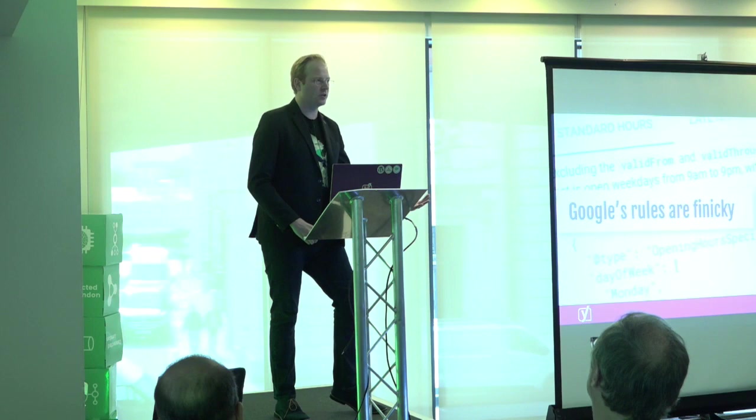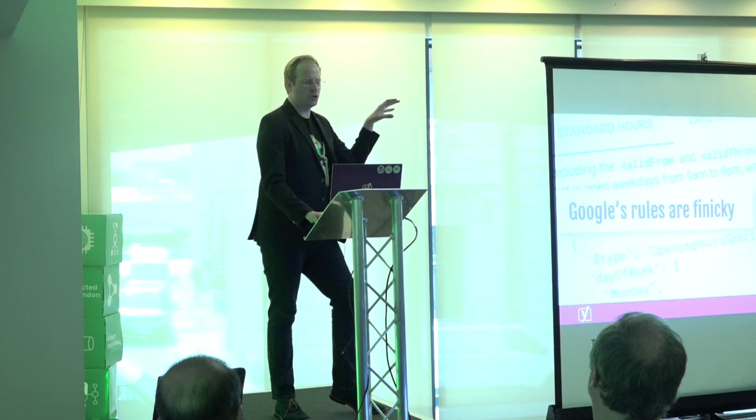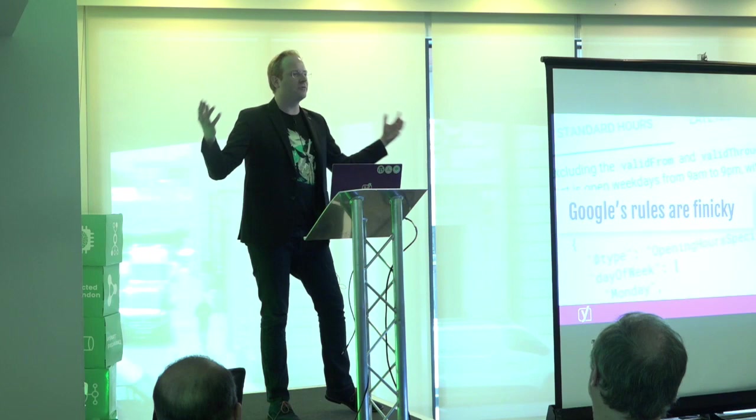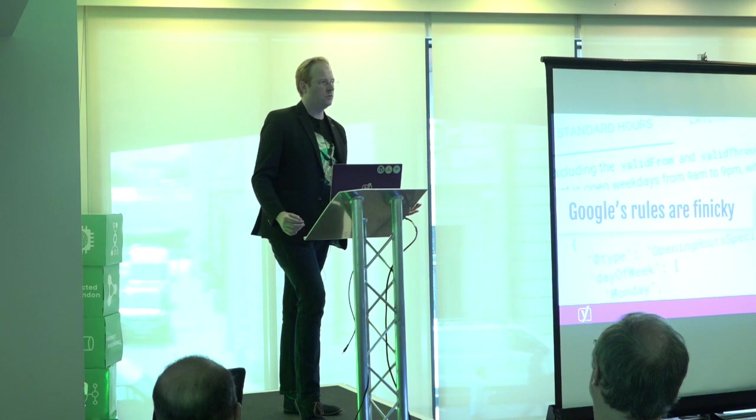It's getting sillier. An article must have a mainEntityOfPage property, but an FAQ block has to be the mainEntity of a page — a directionally opposite relationship. Different bits of Google have designed their graphs in different ways and now I can't have an article which contains an FAQ about a product because there's no way to reconcile the directionality of the graph.